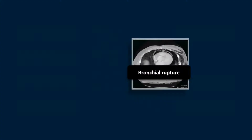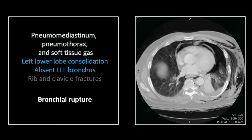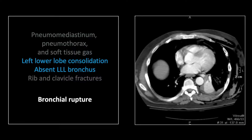Our next case is a bronchial rupture. There is again extensive extrathoracic soft tissue gas, a large pneumothorax on the left, and significant pneumomediastinum. In addition, there is volume loss and near complete consolidation of the left lower lobe, with only tiny bits of air bronchogram visible. You are also unable to track the left lower lobe bronchus in the left infrahilar region — all of this adds up to a bronchial rupture.